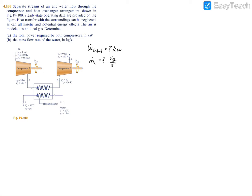To find W_total we need the power of each compressor: W_total = W_A + W_B. Starting with an energy balance over compressor A, we have zero equals Q minus W plus m_dot_inlet times h_inlet minus m_dot_exit times h_exit. Heat transfer is neglected and rearranging gives the power of compressor A equals m_dot_air times (h1 minus h2), that is inlet minus exit enthalpy.